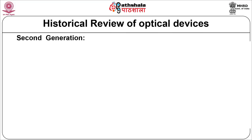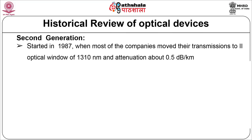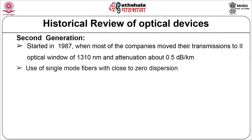Second generation: it was started in 1987 when most of the companies moved their transmission to the second optical window of 1310 nanometer and attenuation of about 0.5 dB per kilometer, with application of single mode fibers with close to zero dispersion.